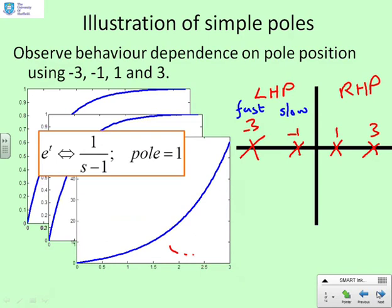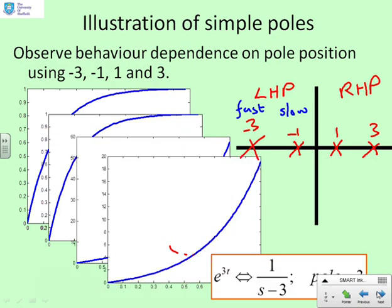Now let's try a pole position that gives a divergent exponential. With a pole at plus one (1 over (s−1)), the signal is diverging as expected — getting to a magnitude of 50 to 60 in about three seconds. Moving the pole to plus three, it diverges much more quickly. So as the pole moves to the right, the divergence gets quicker. And in the left half plane, as the pole moves to the left, the convergence gets quicker.